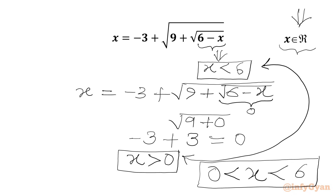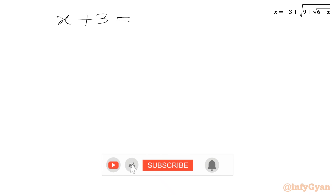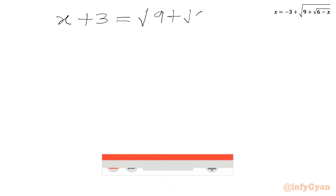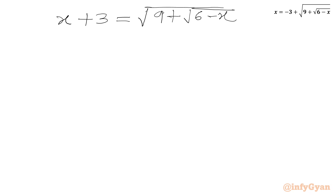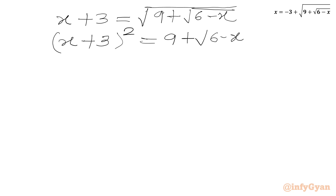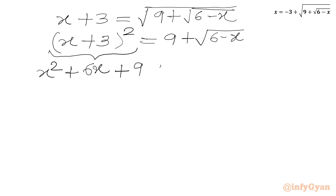Now we will add 3 to both sides of our equation. We write x plus 3 equals square root of (9 plus square root of (6 minus x)). To get rid of the square root on the RHS, we square both sides: (x plus 3) squared equals 9 plus square root of (6 minus x). Using the (a plus b) squared formula, we write x squared plus 6x plus 9 equals 9 plus square root of (6 minus x).